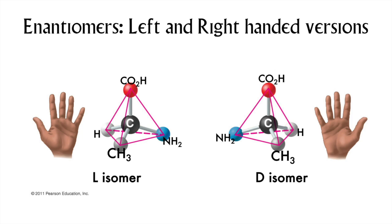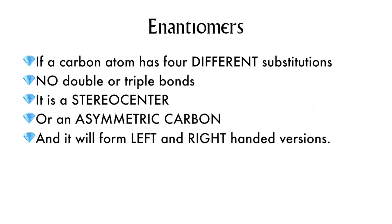This is something that is really difficult to convey in two dimensions, like on a screen. Two molecules may be enantiomers if they have a carbon atom with four different substitutions. This means that that carbon atom cannot have any double or triple bonds. Another word for a carbon that has four different substitutions is a stereocenter, or it may be called an asymmetric carbon. And this carbon atom will form left- and right-handed versions.